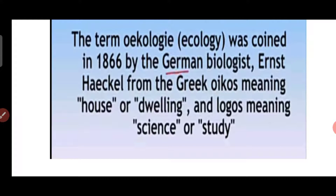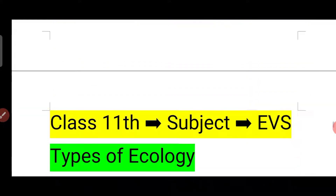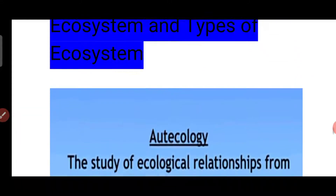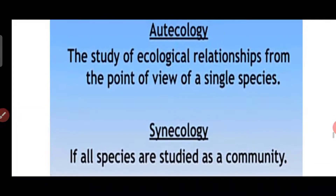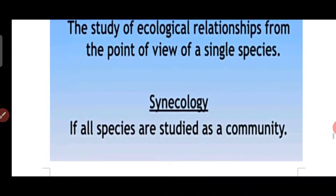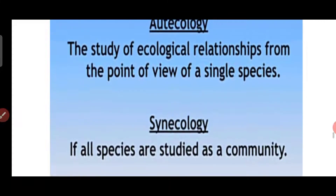So we have two types of ecology: one is autecology and the other is synecology.